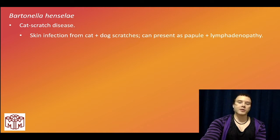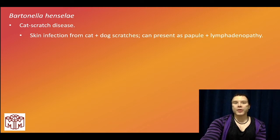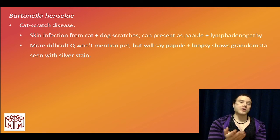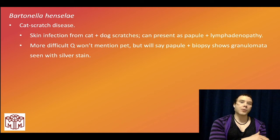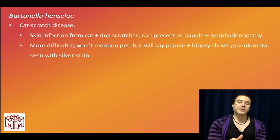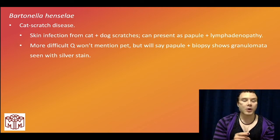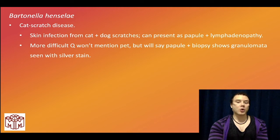Bartonella henselae — very high yield for USMLE — causes cat scratch disease. USMLE is often not so straightforward; they might describe a seven-year-old girl with a papule on her finger where you might be thinking sporotrichosis. But if they say granulomata are visualized on silver stain, they're talking about Bartonella henselae. They can make it a difficult question.